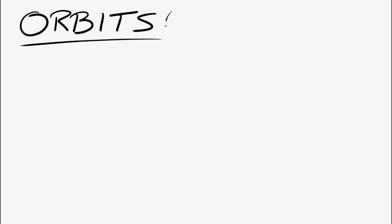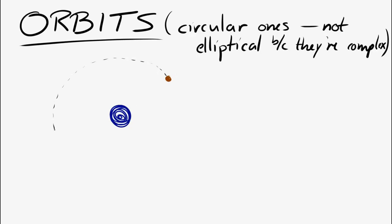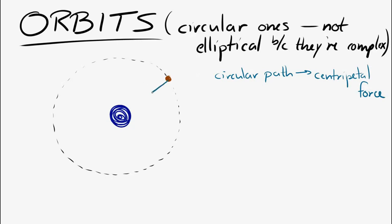Let's look at orbits. We're only going to look at circular orbits today — elliptical orbits get more complicated. Let's imagine the moon going around the earth. The moon travels in a circular path, and if it's traveling in a circular path, we know there has to be a centripetal force. In this situation, the centripetal force acting on the moon is the gravitational force. Since they're the same thing, the gravitational force equals the centripetal force.